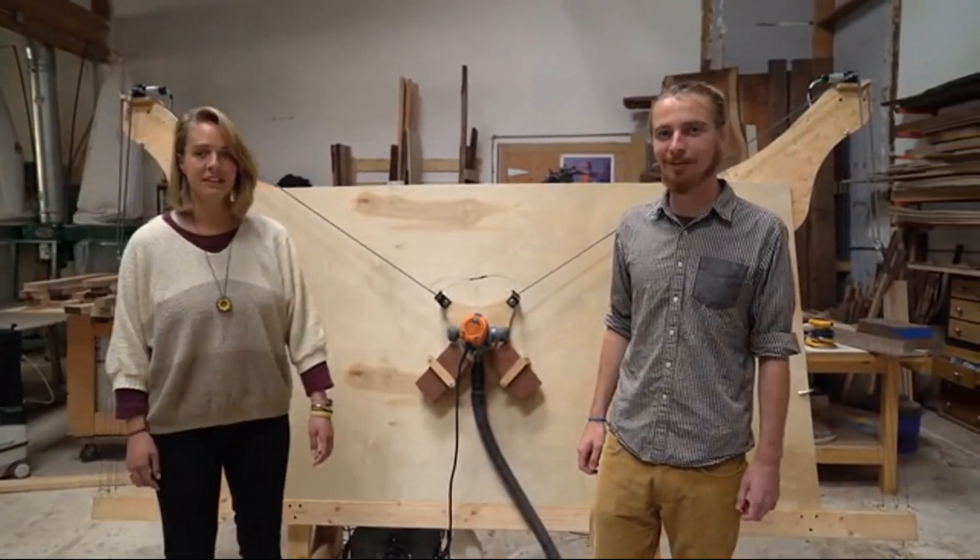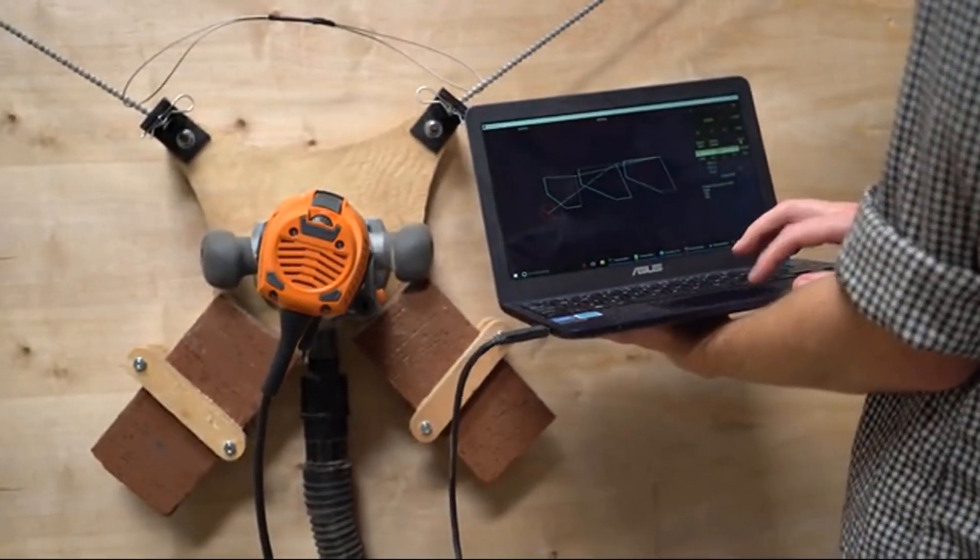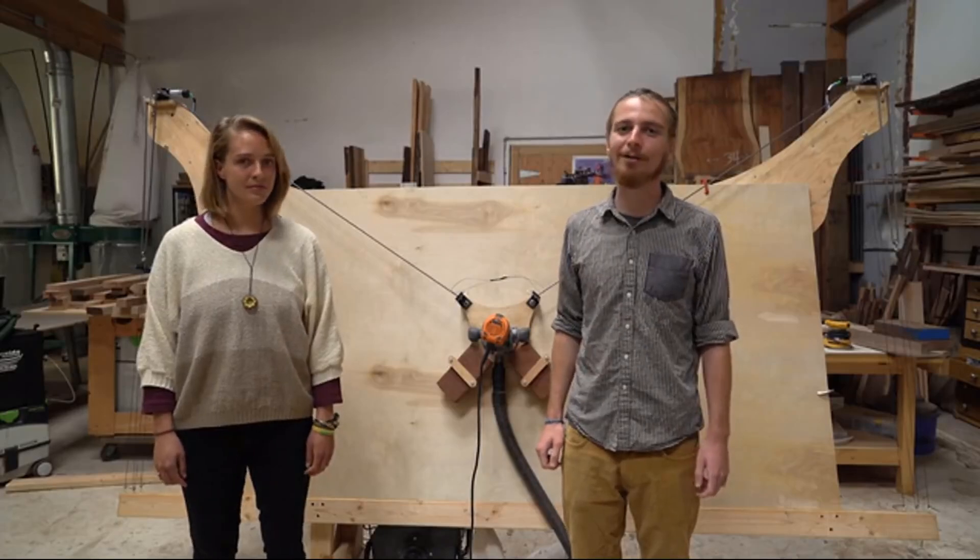Maslow is a 4x8-foot CNC cutting machine designed to change the way we build everything, from art projects to houses. And it's cheap. You can get one now for under $500.